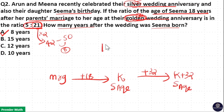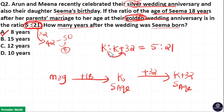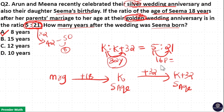Now, K and K plus 32 are in the ratio 5 to 21. The difference between K and K plus 32 is 32 years. In the ratio, the difference is 21 minus 5, which is 16 parts. So 16 parts equals 32 years, meaning 1 part equals 2 years.